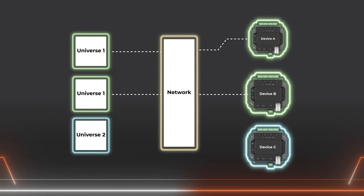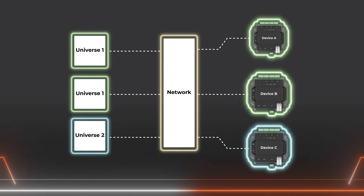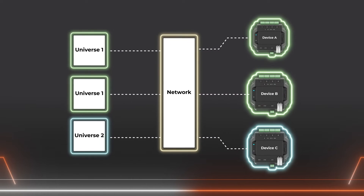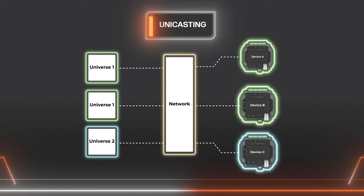The eDMX generator then sends universe 2 to device C using device C's IP address. This method of delivering eDMX universes is referred to as unicasting, which is one-to-one.